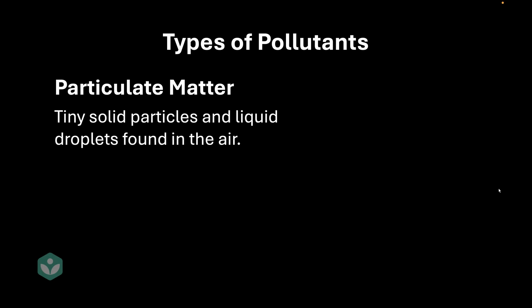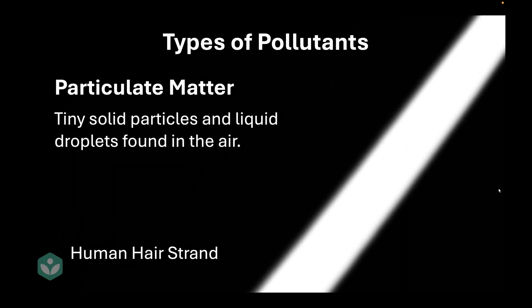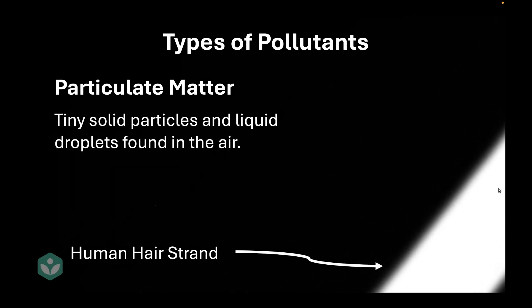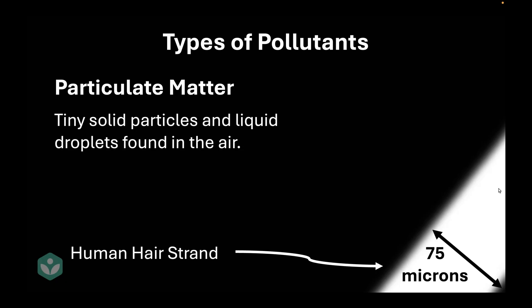Now, let me give you an idea of how tiny these particles are. If this was a single strand of hair and I zoomed into the strand of hair, this strand of hair would have a diameter of approximately 75 microns. These particulate matter particles are smaller than 75 microns.